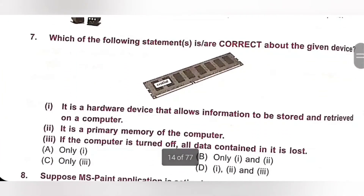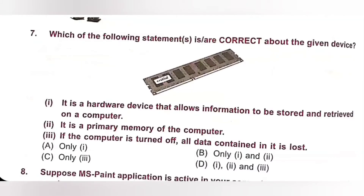Question 7: Which of the following statements are correct about the given device? Statement 1: It is a hardware device that allows information to be stored and retrieved on a computer. Statement 2: It is a primary memory of the computer. Statement 3: If the computer is turned off, all data contained in it is lost. The device shown is RAM (Random Access Memory). All three statements — 1, 2, and 3 — are correct about RAM. Option D, statements 1, 2 and 3, is the correct answer.